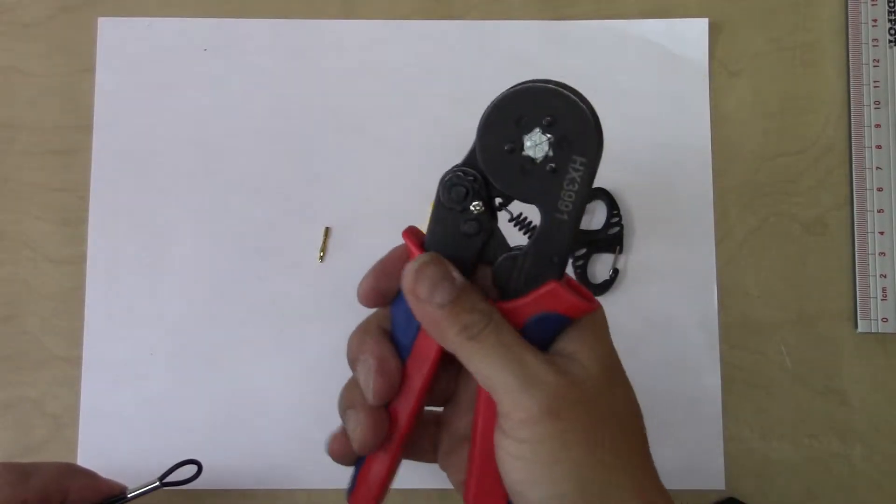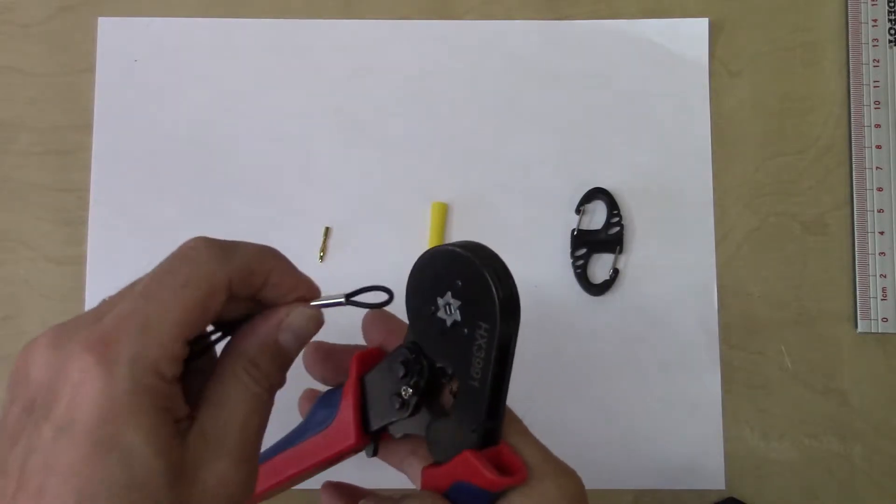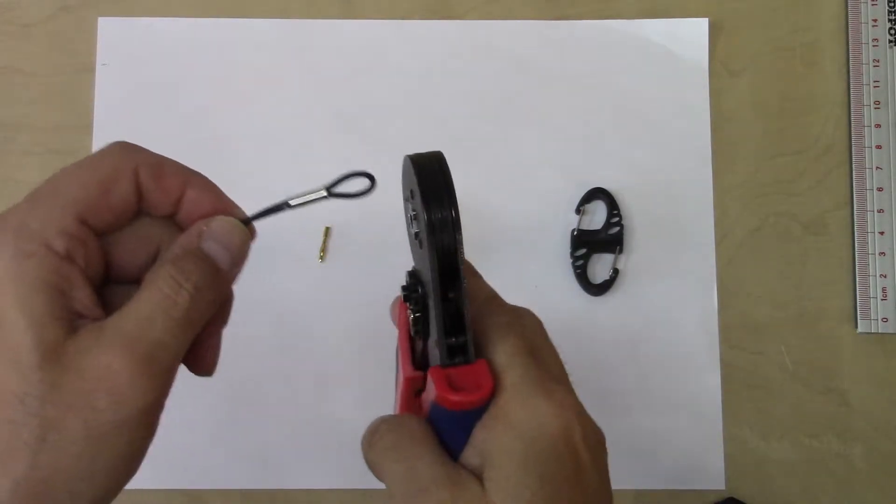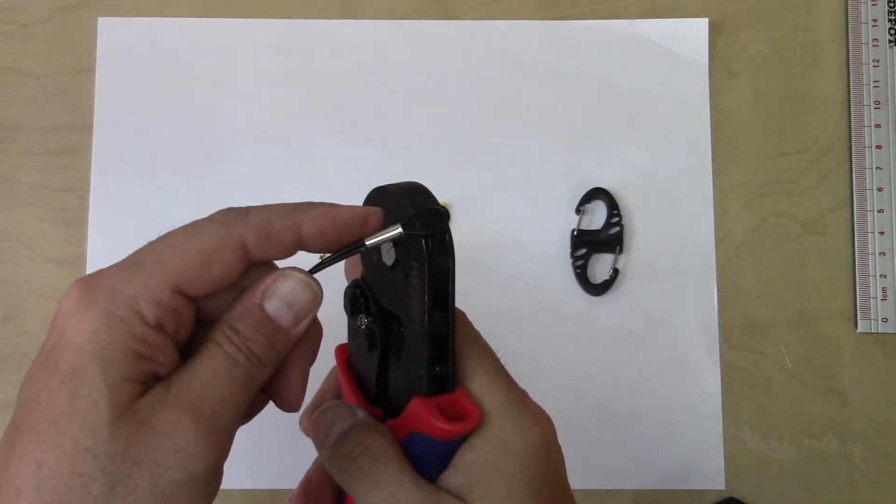This is a hexagonal ferrule clamper. When you open it up, the aperture opens all the way, and you can thread the wire through that and crimp down to create a nice hexagonal crimp.